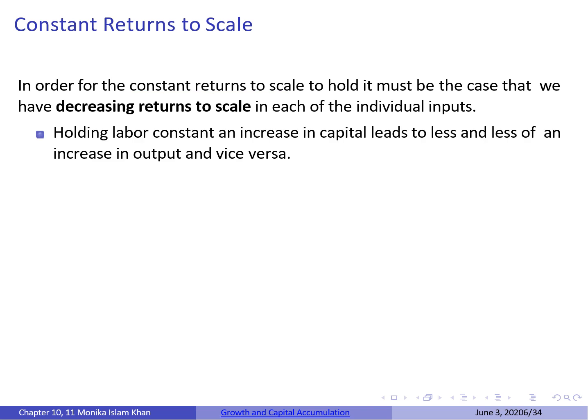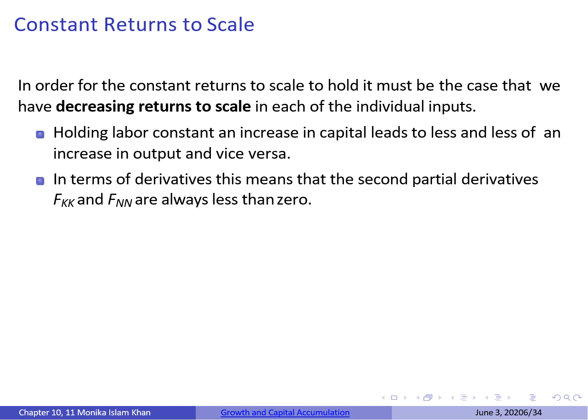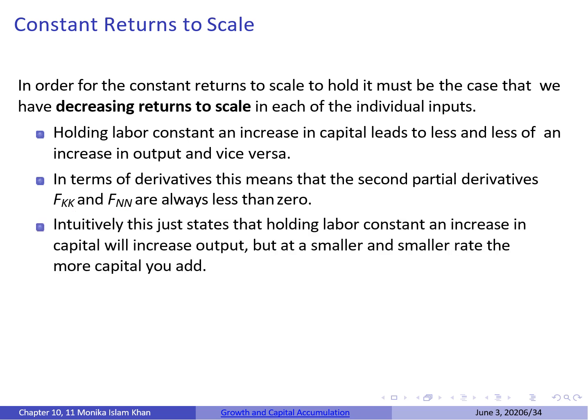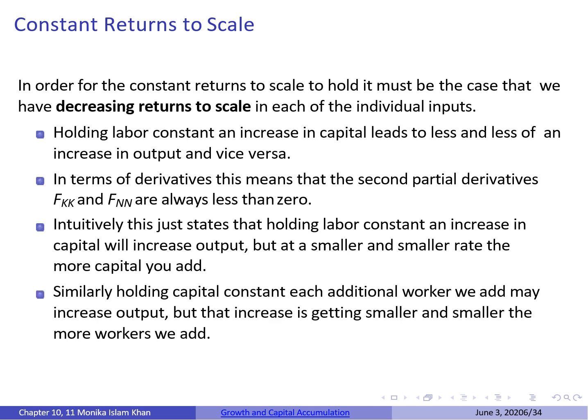Therefore, holding labour constant, an increase in capital leads to less and less of an increase in output. The same is true when capital is held constant and labour is increased. In terms of derivatives, this means the second partial derivatives F_KK and F_NN are always less than zero. Intuitively, holding labour constant, each additional unit of capital increases output but at a smaller and smaller rate; similarly, holding capital constant, each additional worker increases output by a smaller and smaller amount.